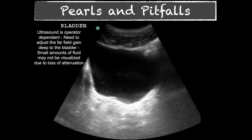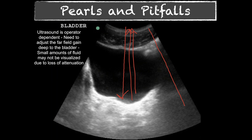Even with correct depth, if the deep gain is too bright, you'll miss small amounts of fluid. Ultrasound beams traveling through a large fluid-filled bladder are not absorbed or deflected — they hit the posterior wall in large numbers and return to the probe, causing the machine to display a bright, high-intensity area deep to the bladder. This posterior acoustic enhancement can obscure small amounts of free fluid. Adjust the time gain compensation or far-field gain on your machine to correct this.